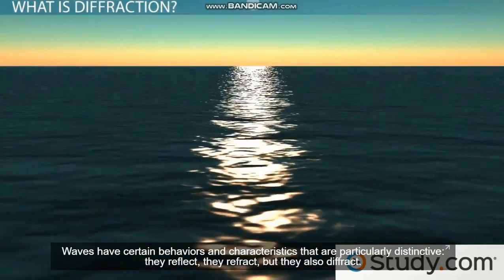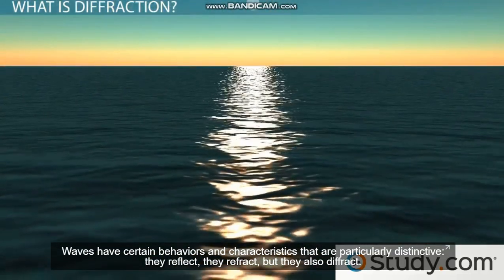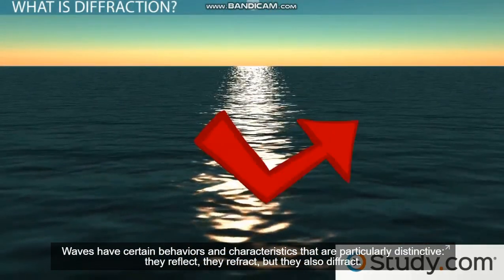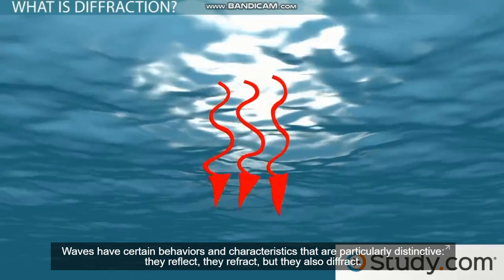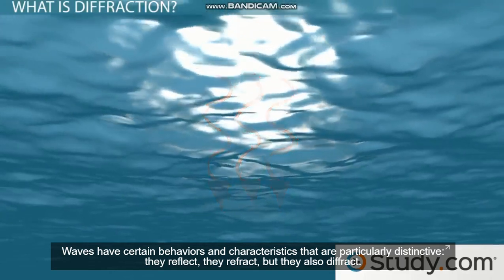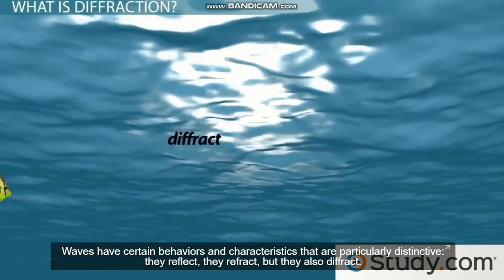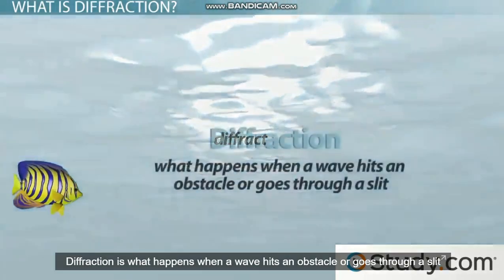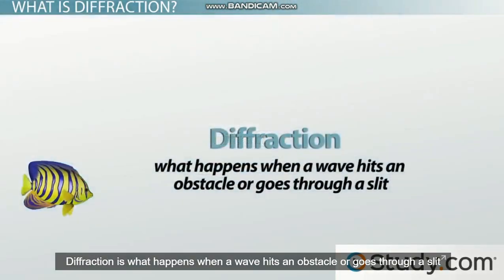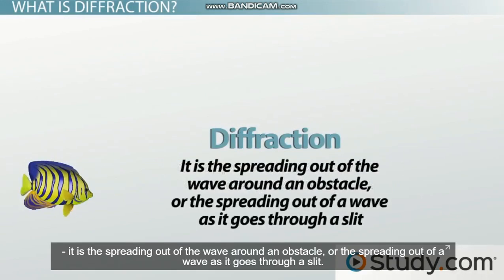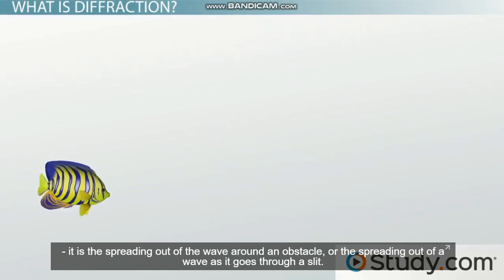Waves have certain behaviours and characteristics that are particularly distinctive. They reflect, they refract, but they also diffract. Diffraction is what happens when a wave hits an obstacle or goes through a slit. It's the spreading out of a wave around an obstacle, or the spreading out of a wave as it goes through a slit.